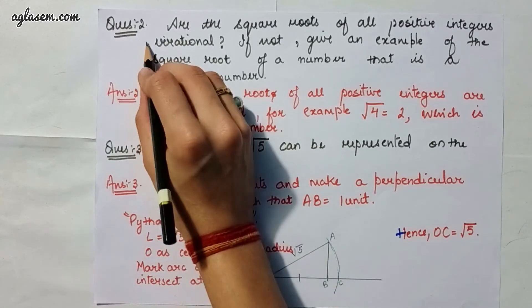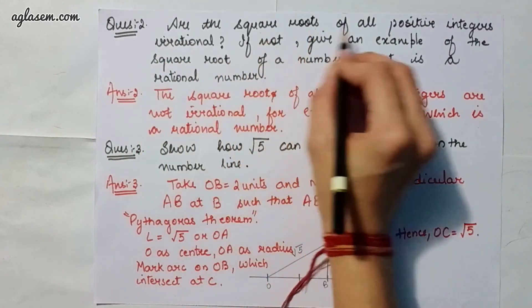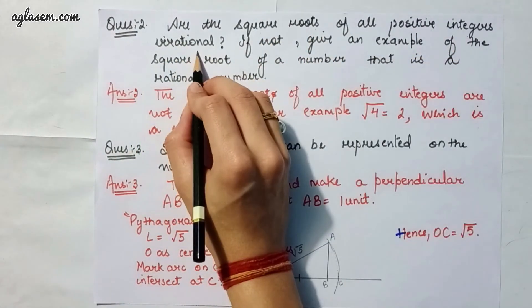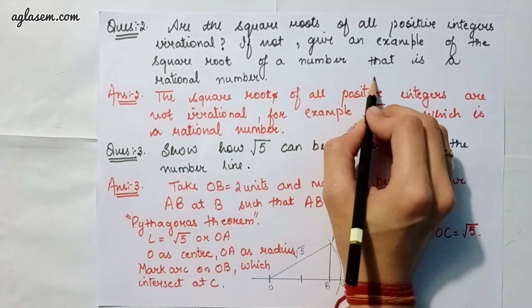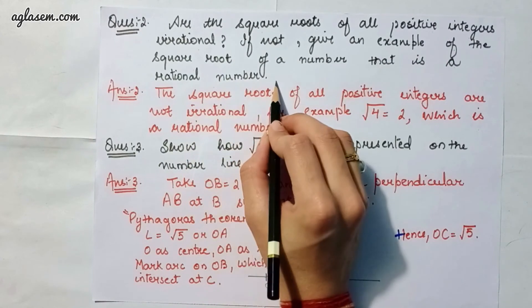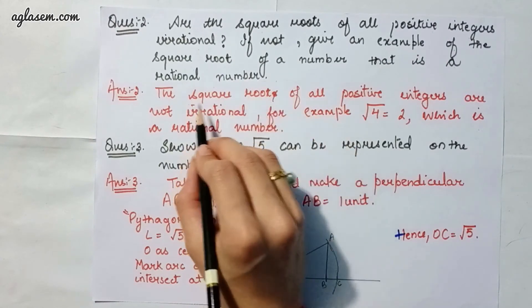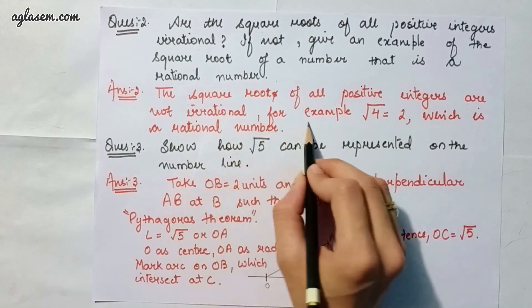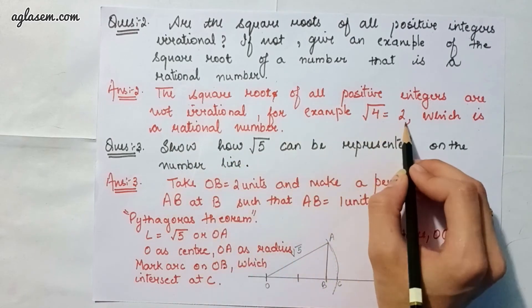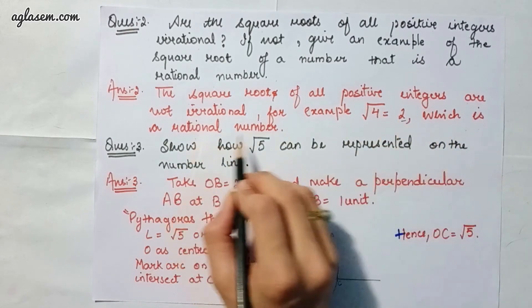Moving to our second question, which asks are the square roots of all positive integers irrational? If not, give an example of a square root that is a rational number. The answer is the square roots of all positive integers are not irrational. For example, root 4 which equals 2, which is a rational number.